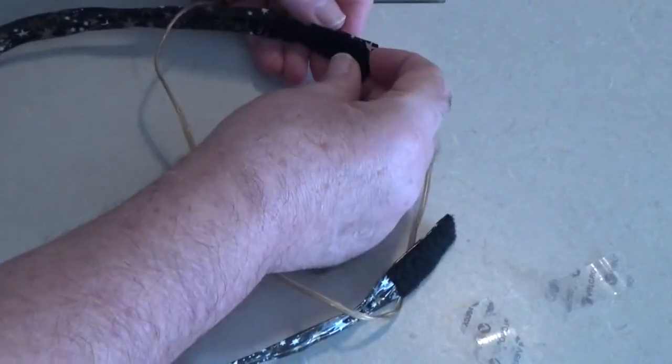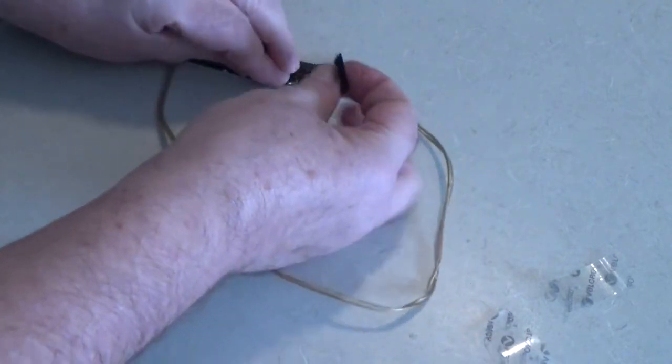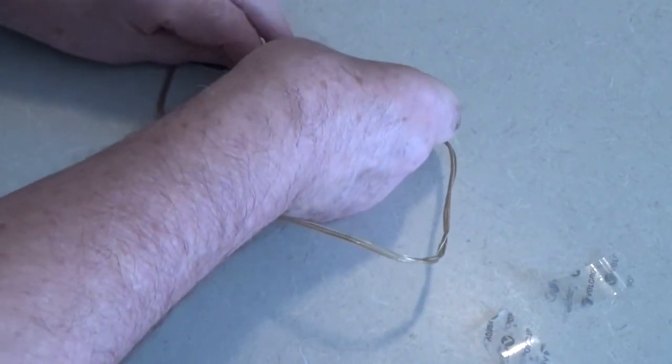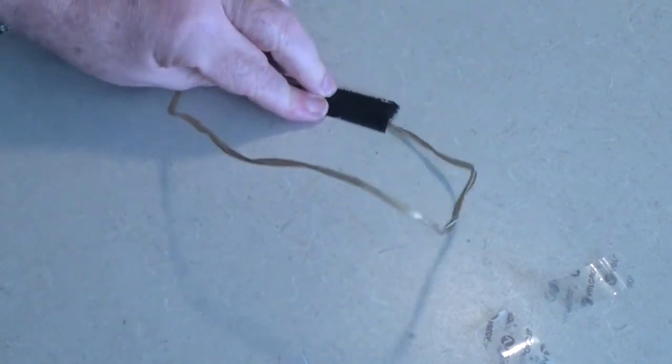Apply the other piece of Velcro to the opposite end. Make sure the loop isn't twisted and the Velcro is on the correct side, so when the heater is installed, it will lie flat against the surface of your telescope.